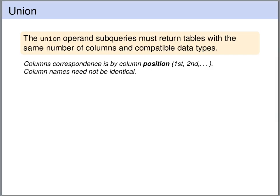When using the union operation to form the union of two queries, both queries must return the same number of columns and the corresponding columns must have compatible data types. The correspondence of columns is not defined via names but via positions — so the first columns must match, the second columns must match, and so on.